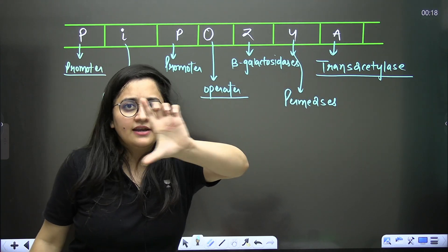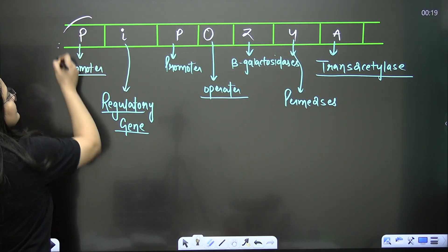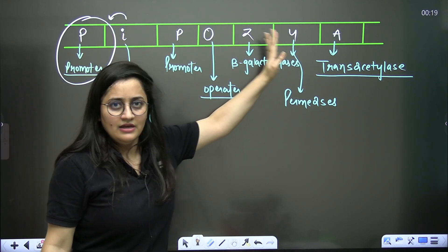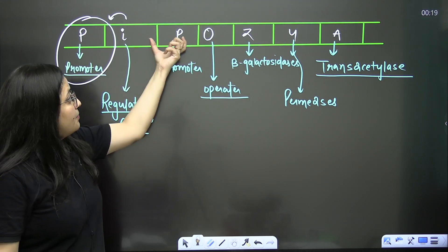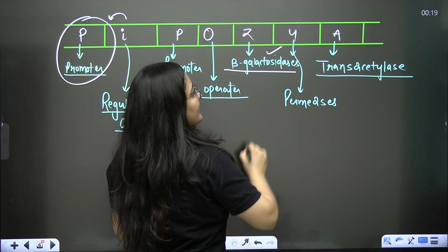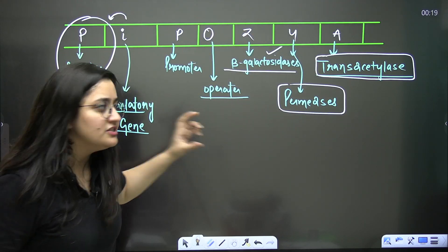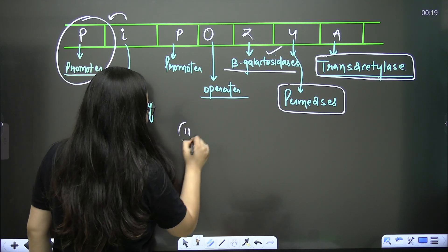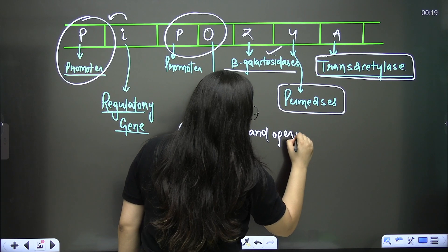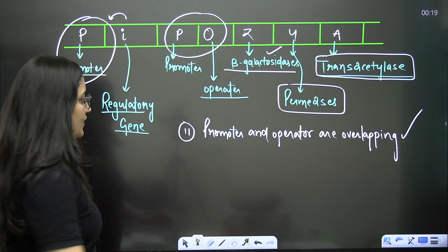The lac operon sequence is P-I-P-O-Z-Y-A. There are two promoters because the first is the promoter for the regulatory gene. Focus on: P (promoter), O (operator), Z, Y, A (structural genes). Z encodes beta-galactosidase, Y encodes permease, A encodes transacetylase. An important point: the promoter and operator are overlapping — they are not separately placed.